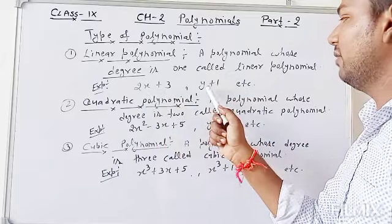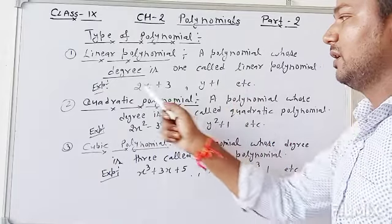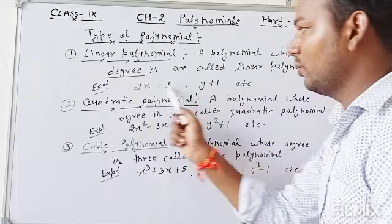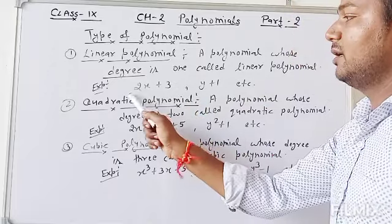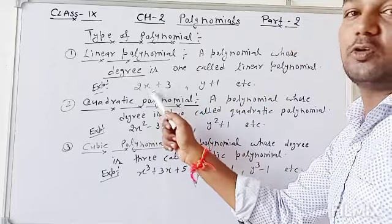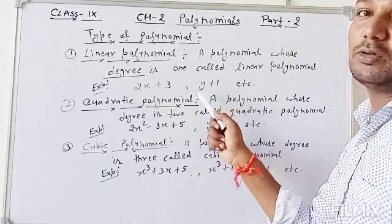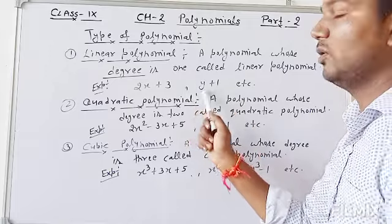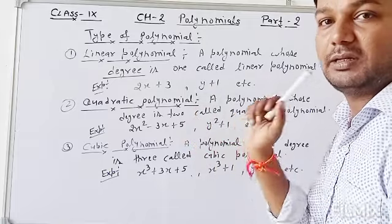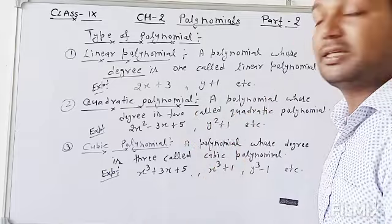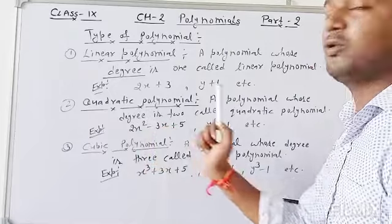Here, 2x + 3 and y + 1 — in these polynomials you can see the degree of each is 1, so these are examples of linear polynomials. Next is the quadratic polynomial.